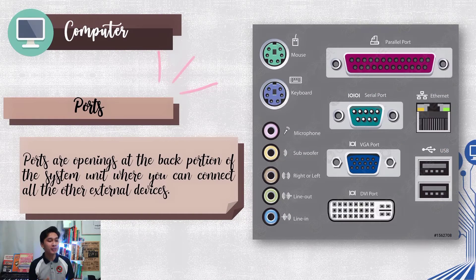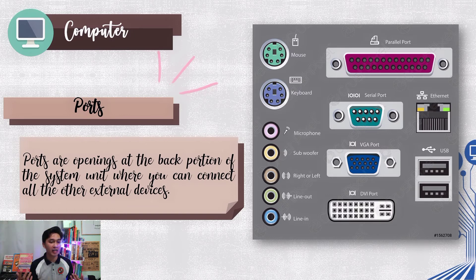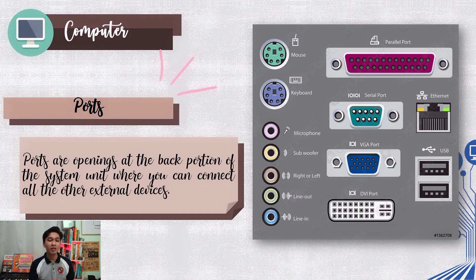Ports are openings at the back portion of the system unit where you can connect all other external devices. The various types of ports include: the mouse port, keyboard port, microphone port, subwoofer right or left, line-out, line-in, parallel port, serial port, VGA port, DVI port, Ethernet, and the USB port.